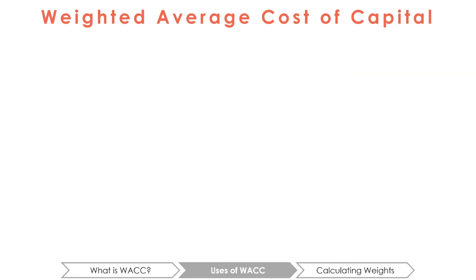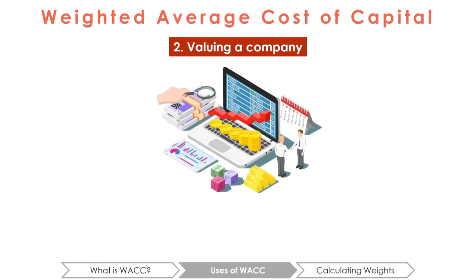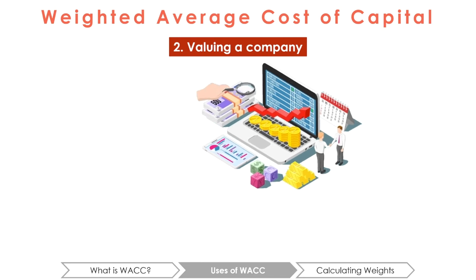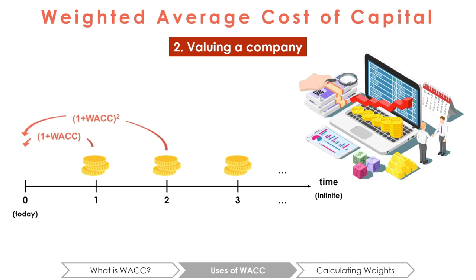The second use of WACC is as a discount rate when calculating the value of a company. Investors care about how much a company is worth as this helps them determine whether they are paying a fair price for a share. We can estimate the company's future cash flows and use WACC, which reflects the average riskiness of the whole firm, as an appropriate discount rate to bring these earnings to present value.